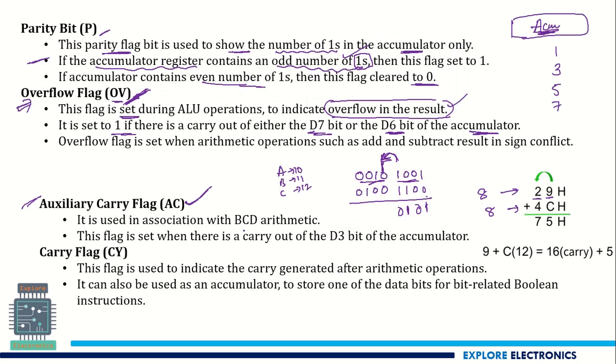We say whenever we are doing the BCD arithmetic we are going to get this information or the flag is set when there is a carry out of the D3 bit. D0, D1, D2, D3. From D3 to D4 there is a carry. Then we say there is an auxiliary carry. This will be set to 1.